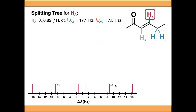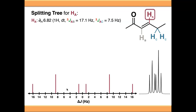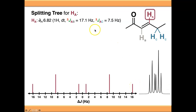Our final signal will look something like this on our actual NMR spectrum. We've got a 1:2:1 triplet and then a 1:2:1 triplet, split by the second J value - the doublet splitting. This is all reflected in our splitting tree, so splitting trees allow us to predict what our signal is going to look like, given the J values that we have.